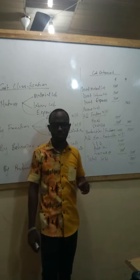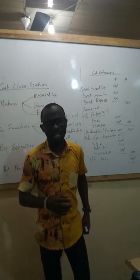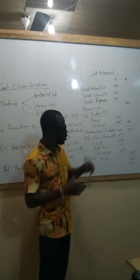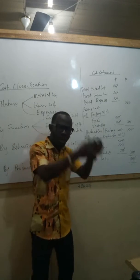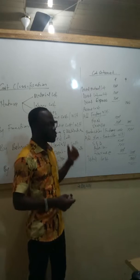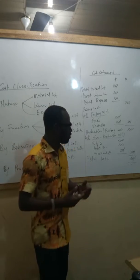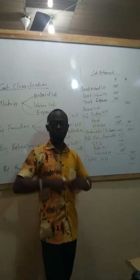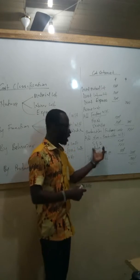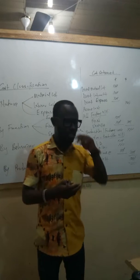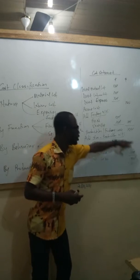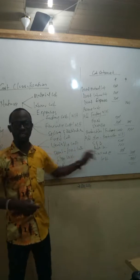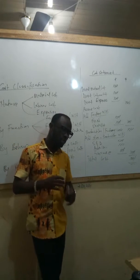Once we have the production or factory cost, remember we are determining the total cost of the products. So once we have the production cost, we now add non-production overheads - this is where selling and distribution overheads, administration overheads, and financing overheads come in. We add all those non-production overheads to the factory or production cost, and this gives us the total cost.